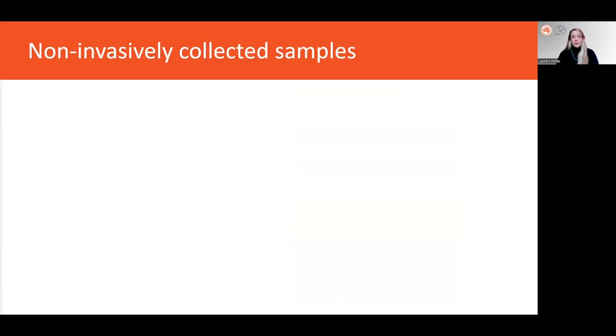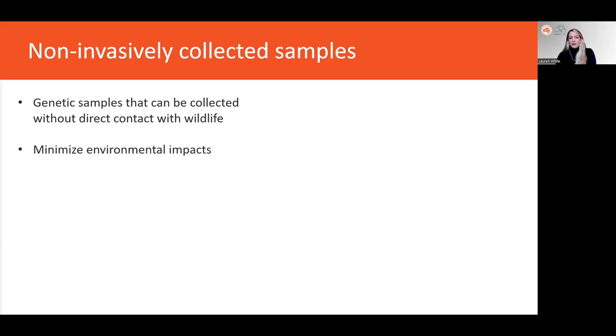So in situations in which wildlife trapping and handling are off the table, researchers may turn to sample types that can be collected non-invasively. These are genetic samples that can be collected without direct contact with wildlife, and so they may minimize the impact on the environment and the study species, and they can be less time consuming and more efficient to collect in the field than traditional tissue or blood sampling.